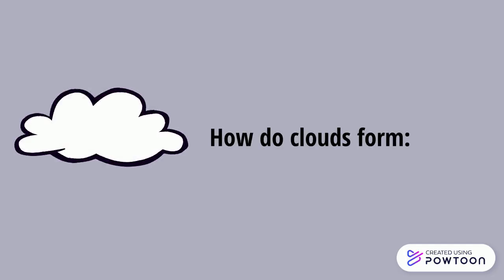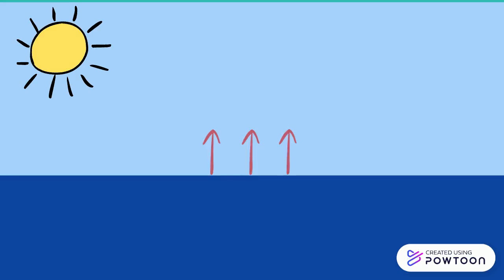Have you ever wondered about how clouds form? Well, when the hot temperature from the sun shines on the ocean, the water droplets from the ocean float and rise into the sky, creating steam or water vapor.